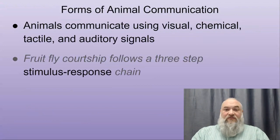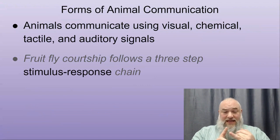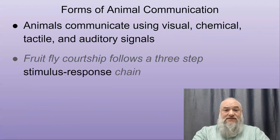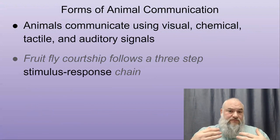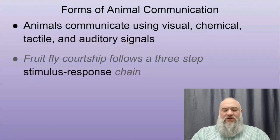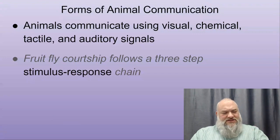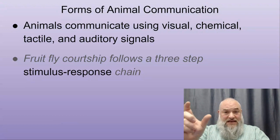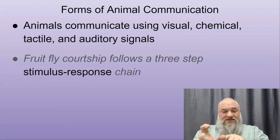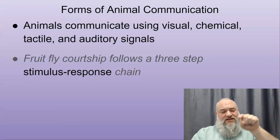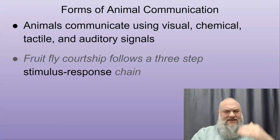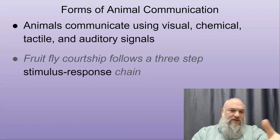Different forms of animal communication include visual (mating dances, the stickleback's red belly), chemical (pheromones), tactile (touch), auditory (sound), and taste. Fruit flies have a stimulus-response chain where each response becomes the stimulus for the next — a behavioral cascade, similar to signaling cascades seen at the cellular level throughout biology.